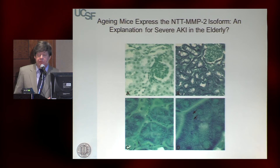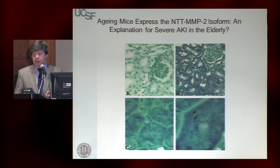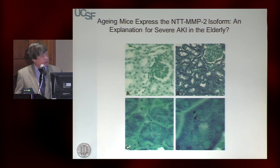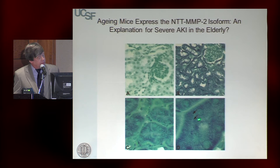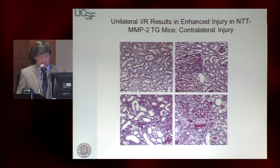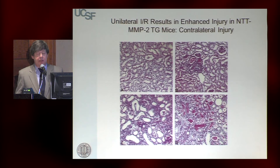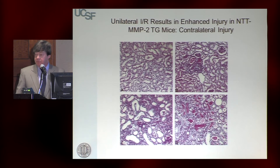We first found this isoform in hearts and kidneys of older mice — normal middle-aged mice. This is a four-month-old mouse, and this is a 14-month-old mouse, equivalent to about a 50-year-old person. You can see nice expression of this truncated variant with a filamentous expression typical of mitochondrial localization. We then set up a model of unilateral ischemia reperfusion injury. Most people use bilateral models, but the unilateral model has the advantage that it's not lethal, and you can follow these mice out for weeks or months.